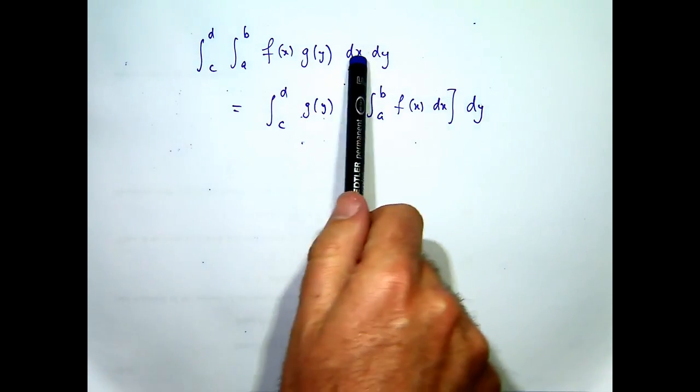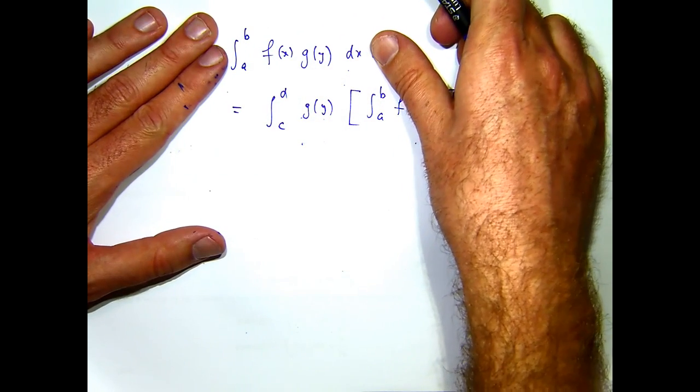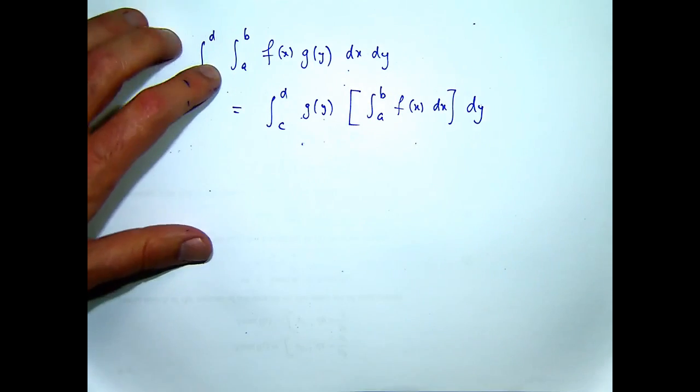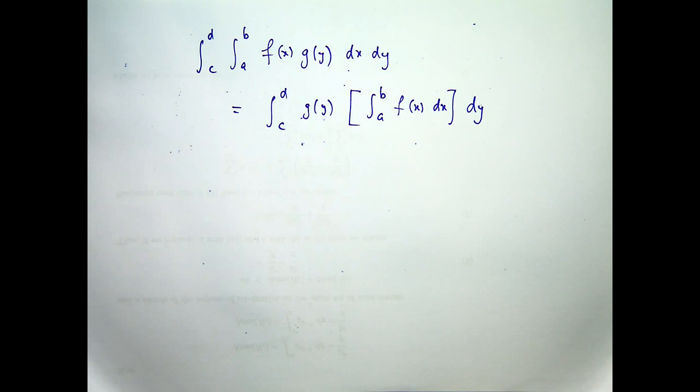Okay, so what I've done there, for the inside integral, y is a constant, so g of y is a constant, and I know with integrals I can bring a multiplying constant out the front.